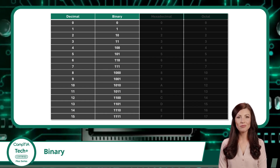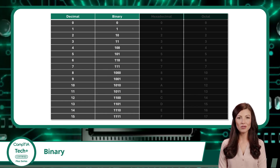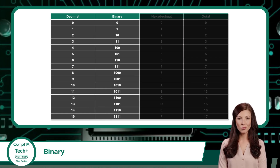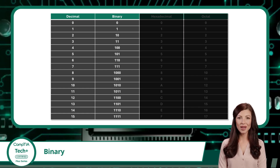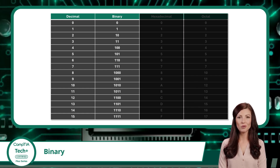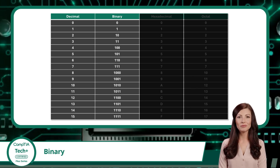So the next time you see a long string of 0s and 1s, don't let it intimidate you. It's just binary. And while it may look complex, it's the most natural and direct way for a computer to operate.